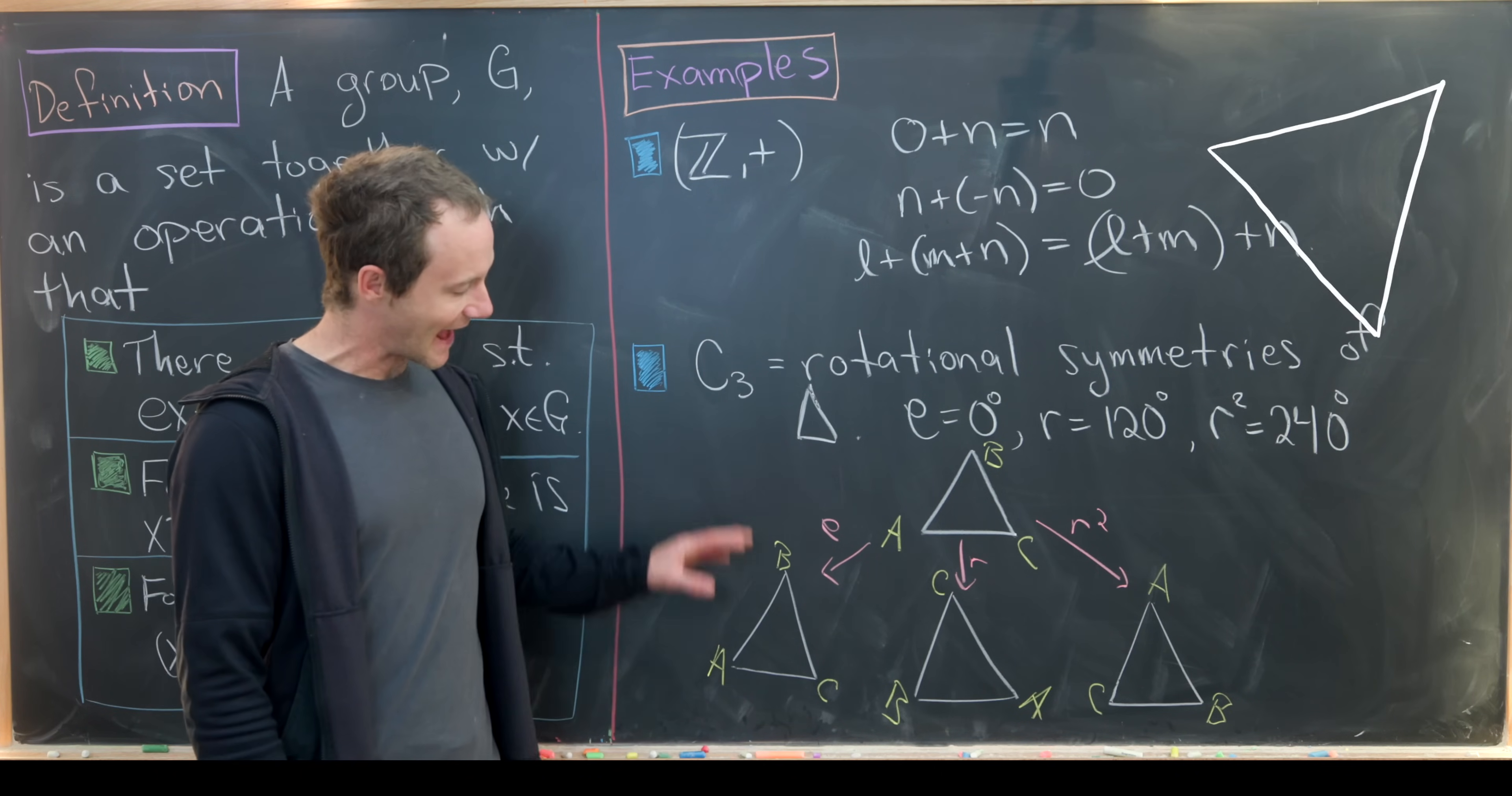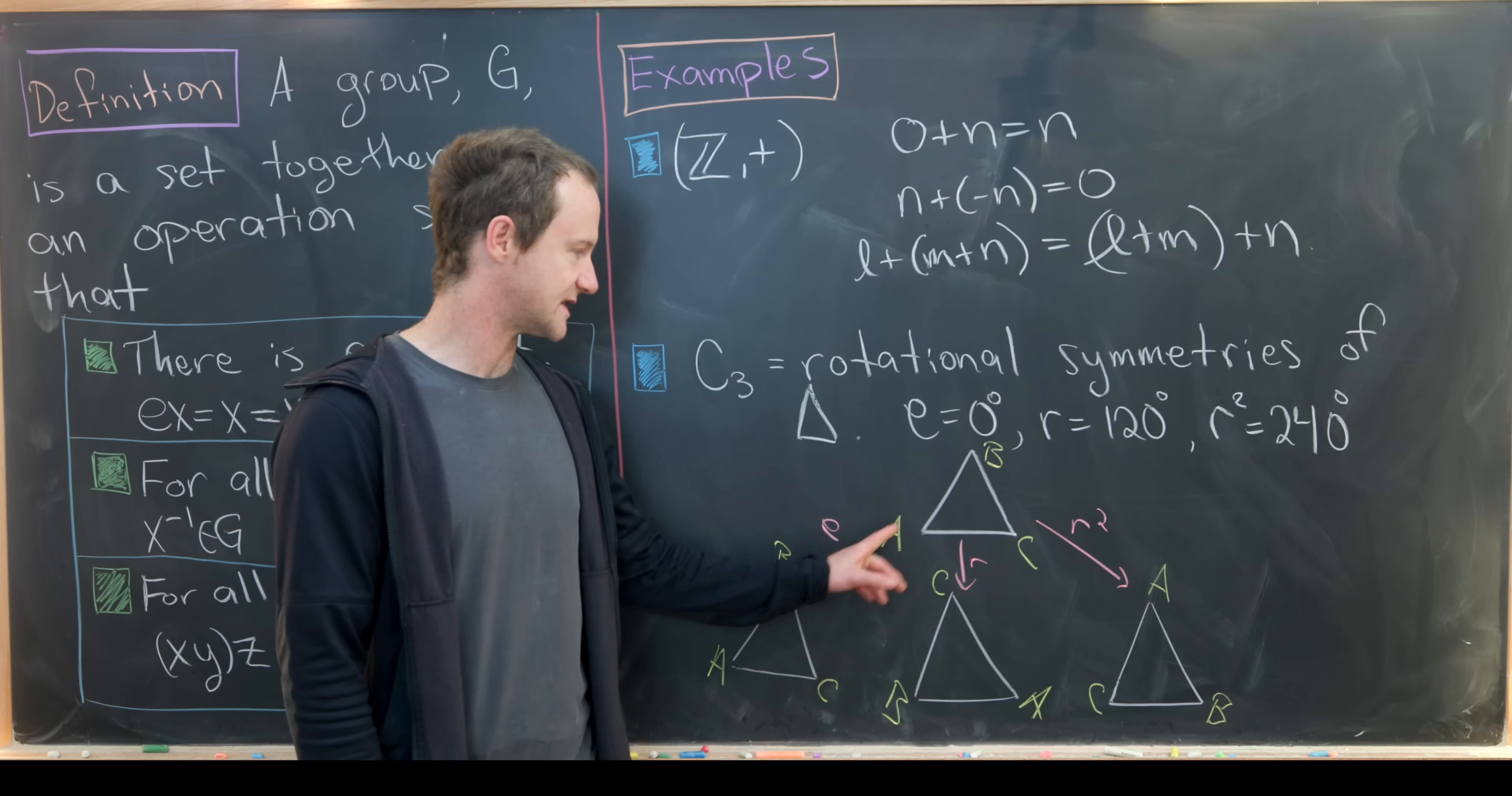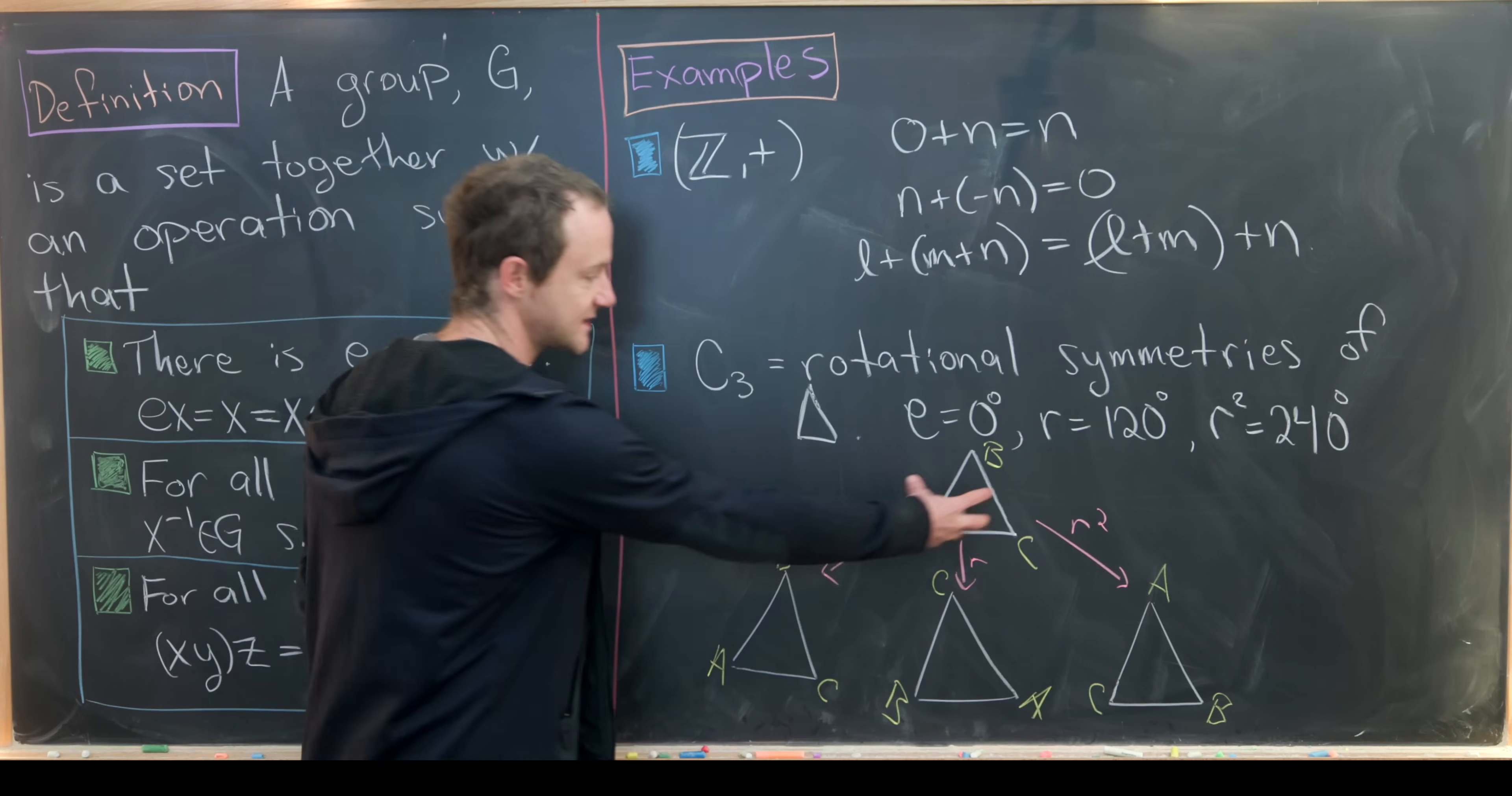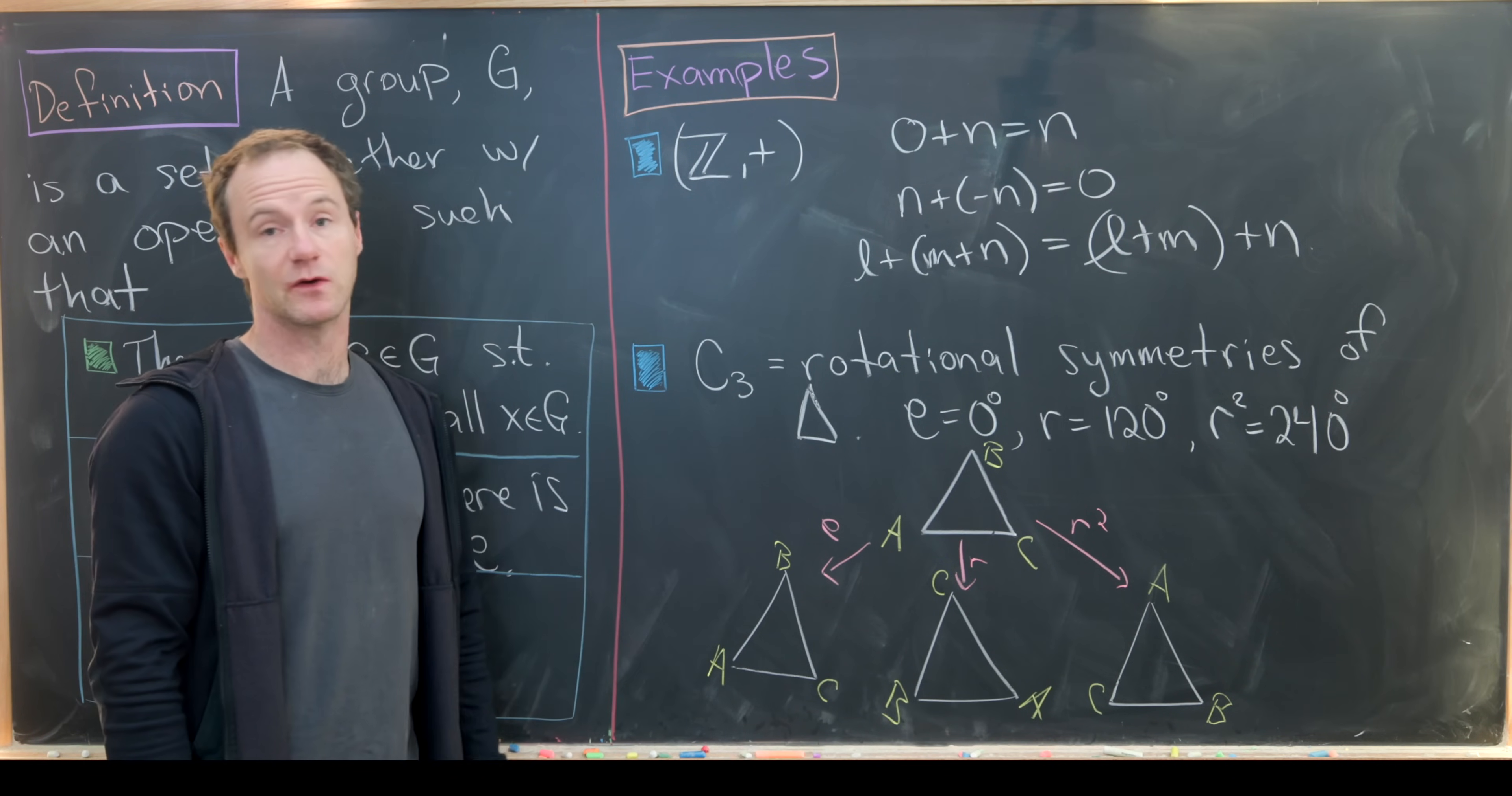This is an outline of how those operations take place. We have our starter triangle labeled clockwise as A, B, C. If we apply a zero degree rotation, there is no change. If we apply a 120 degree rotation counterclockwise, that rotates our triangle this way. So notice those vertices have been rotated.